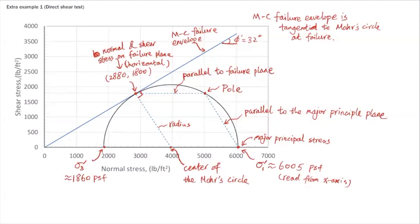So this is basically the extra example. It shows what you can get from direct shear test results: in addition to the shear strength parameters, you can identify the inclination of the major and minor principal planes and also the principal stress values using the Mohr circle.